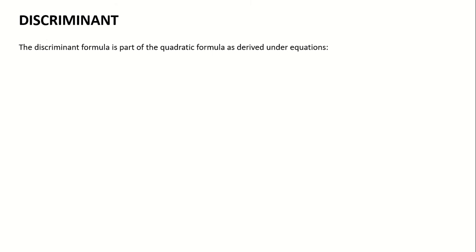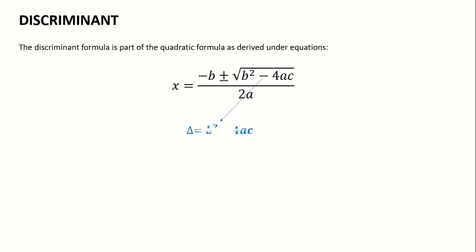The discriminant is part of the quadratic formula. In the quadratic formula, underneath the square root is simply b squared minus 4ac, and that is what we refer to as the discriminant, shown as a small triangle (delta).